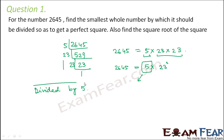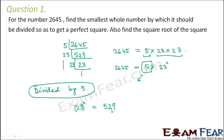Now what happens if you divide it by 5? The moment you divide it by 5, it becomes 23 square. So 23 square is equal to 529. Therefore root over 529 is equal to 23. So 23 is the square root of the new perfect square, which is 529.